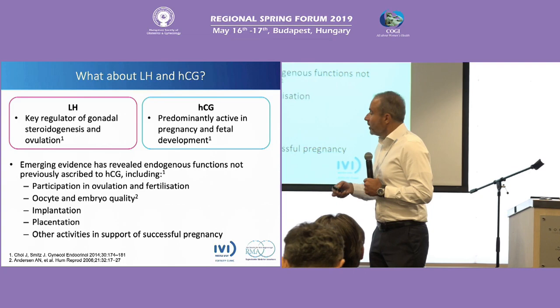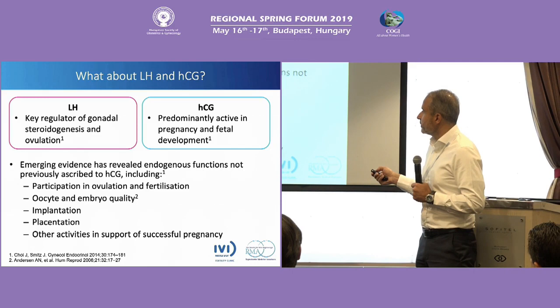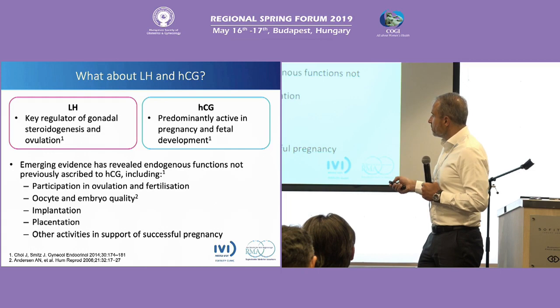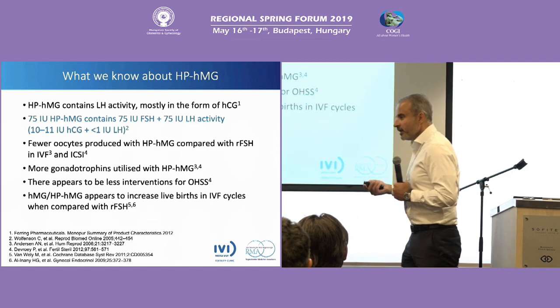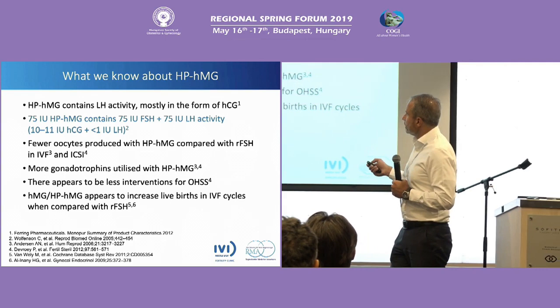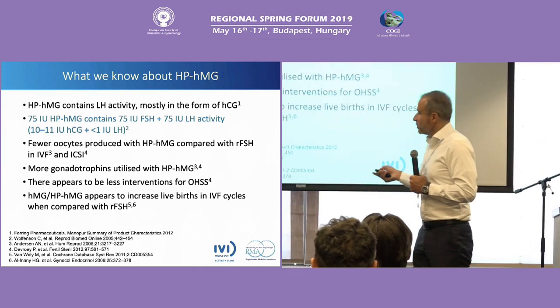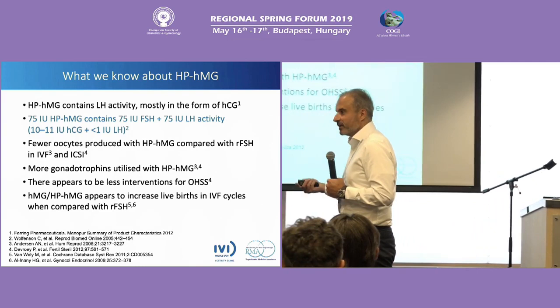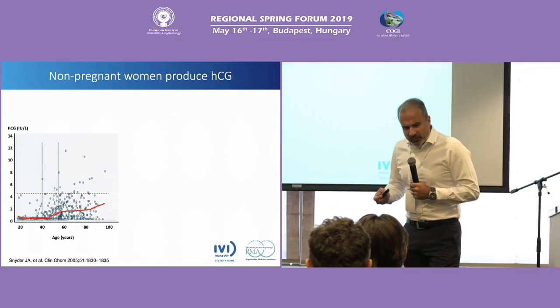LH and hCG: what do they do? Of course, LH is a key regulator for steroidogenesis — the two-cell luteotropin theory. hCG is mainly a pregnancy hormone. But we know that hCG also plays a role in ovulation, oocyte and embryo quality, and implantation. If you look at the different products, HMG contains urinary FSH. It has LH activity, but it's not LH — it has around 9.9 to 10 units of hCG equivalent. It has almost no LH itself. This is important to know.